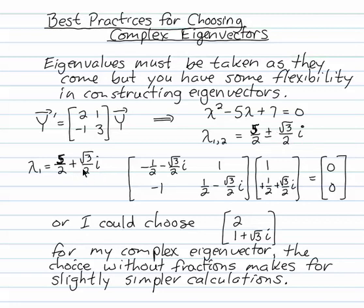Work with the positive imaginary part. Form the adjusted matrix, and you can choose the eigenvector just by swapping the elements in the first row and changing the sign, giving 1 and 1 half plus root 3 over 2i. But why deal with fractions if you don't have to? A simpler choice would be to double that eigenvector and write 2 and 1 plus root 3i. That's going to make the calculation slightly easier.